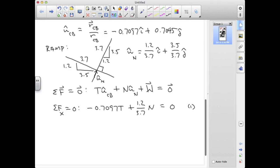And in the J direction, I have plus 0.7045t plus 3.5 over 3.7n minus the weight equals 0. And I'll bring the weight over the other side. It's 400 newtons. I'll call that equation 2.